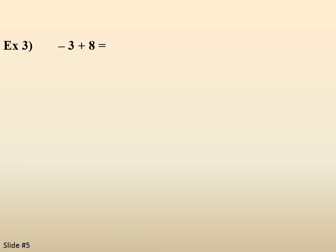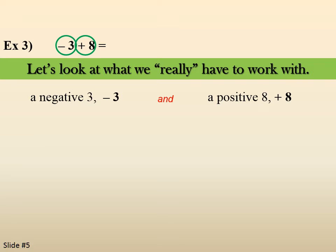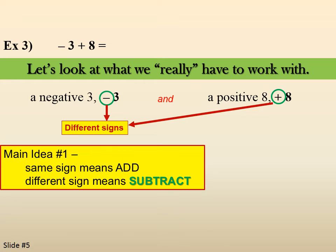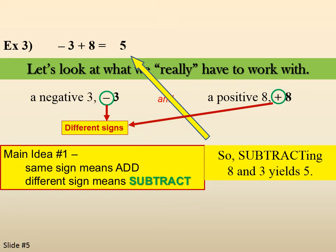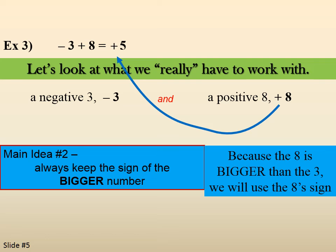Negative 3 plus 8. We have a negative 3 and a positive 8. They're different signs — one is positive, one is negative — so that means we're going to subtract them. Subtracting: always do the bigger one minus the smaller one, so 8 minus 3 gives us 5. Now we keep the sign of the bigger number. The 8 is bigger than the 3, so we grab the 8's sign. So the answer is positive 5, or just 5.